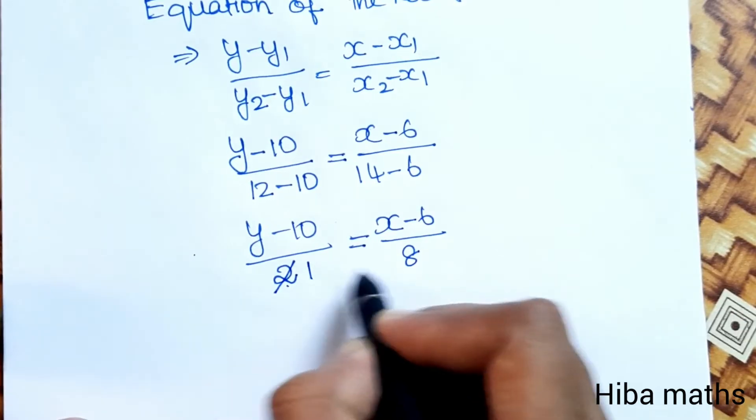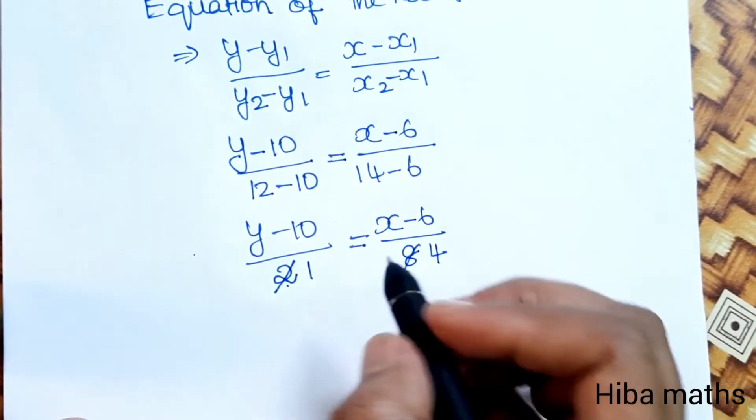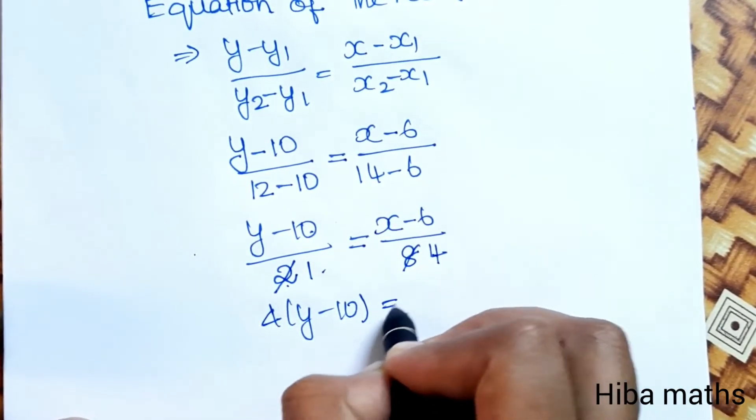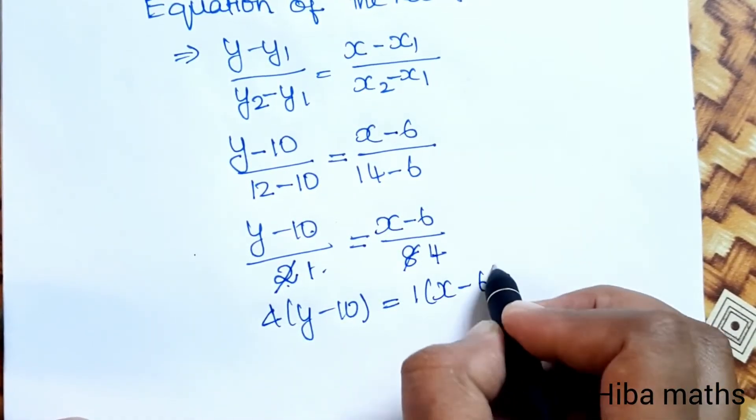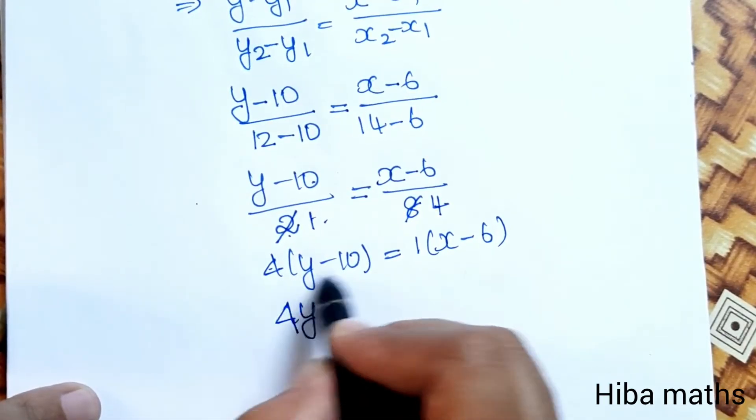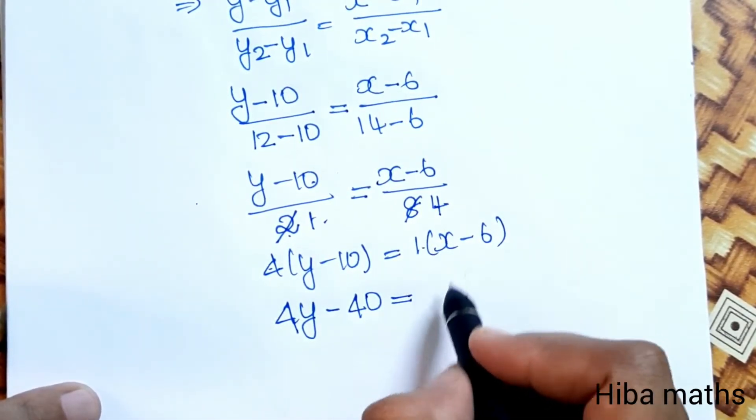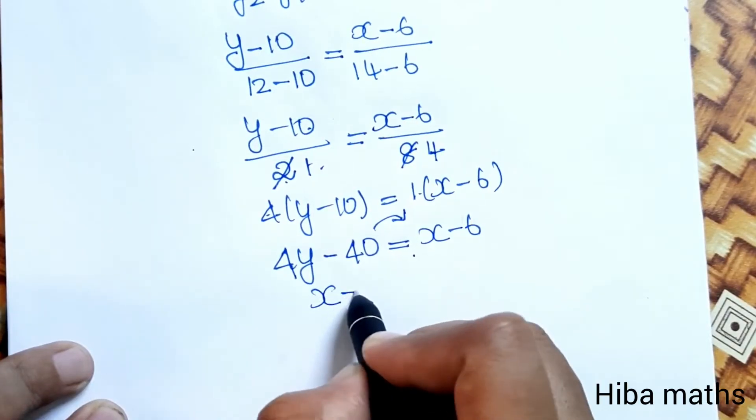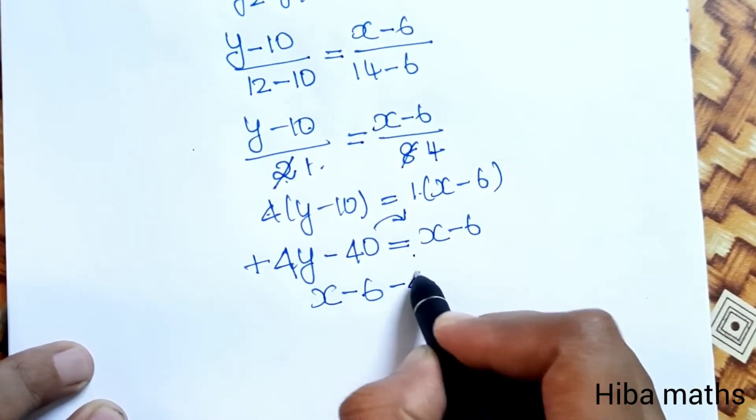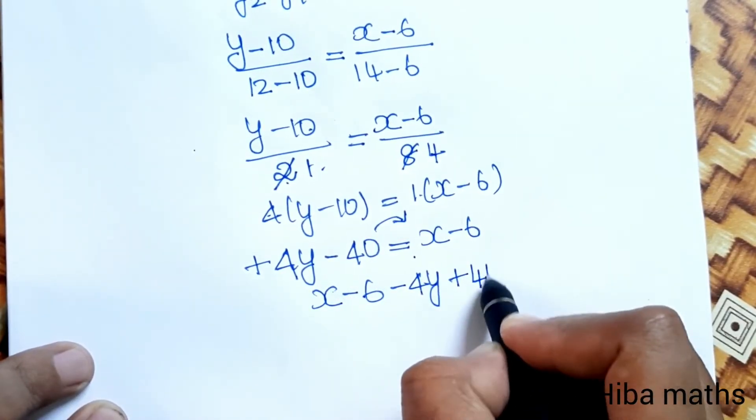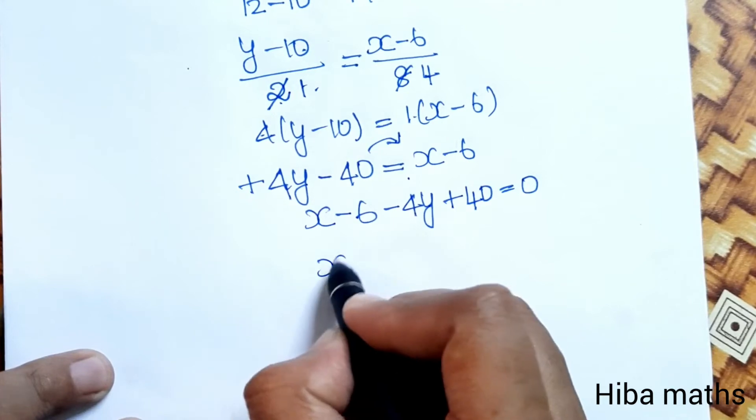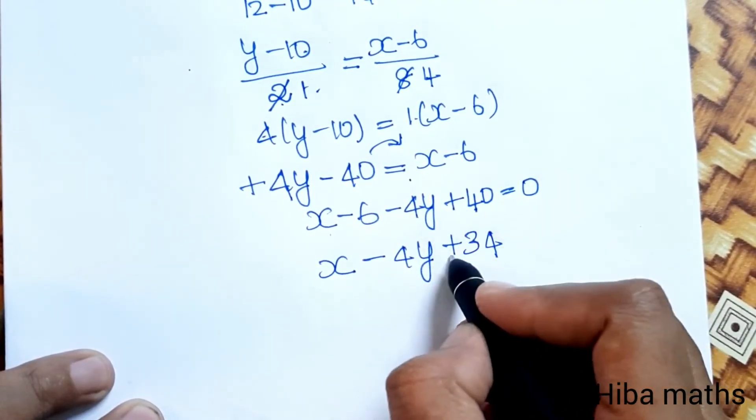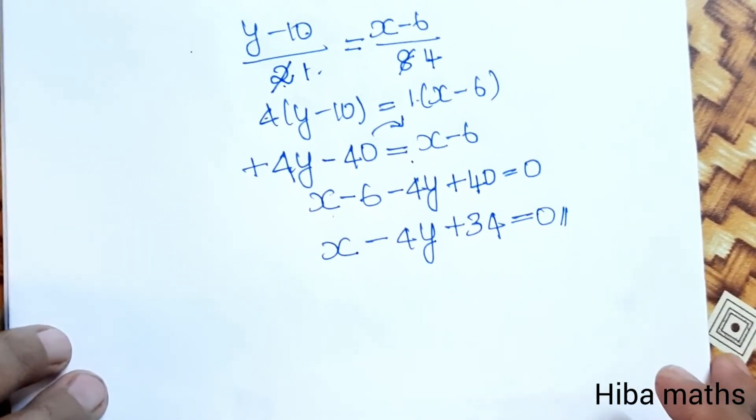Dividing by 2: (y - 10)/1 = (x - 6)/4. Cross-multiplying: 4(y - 10) = 1(x - 6). 4y - 40 = x - 6. Rearranging: x - 4y - 40 + 6 = 0. So x - 4y + 34 = 0. This is the required equation of the rod.